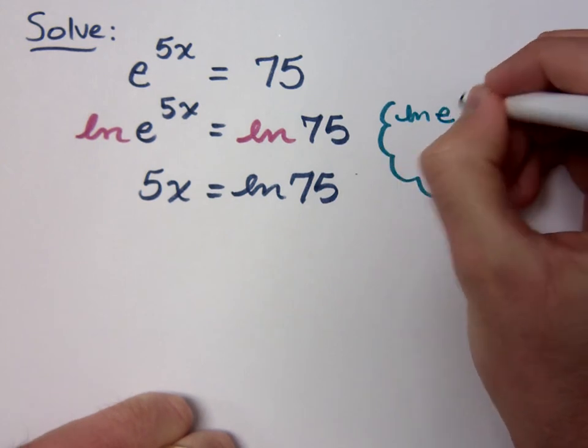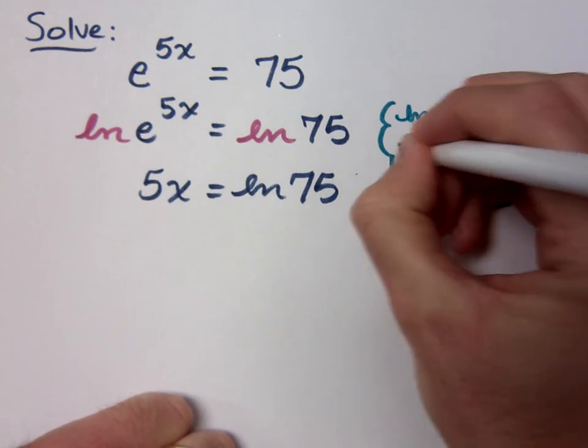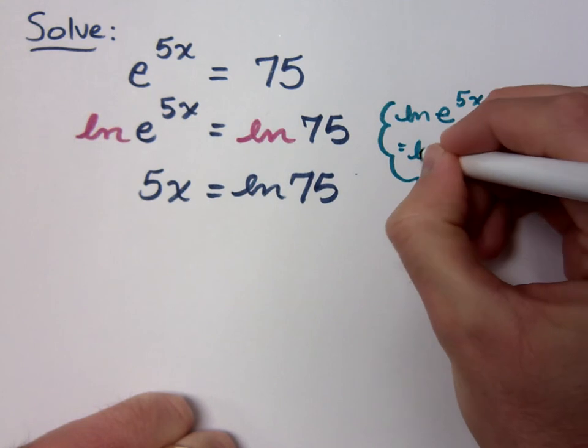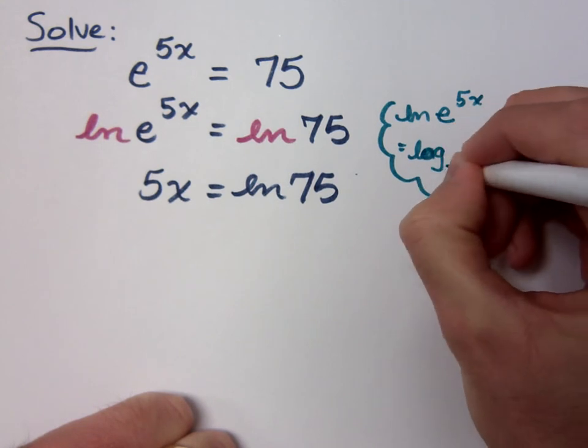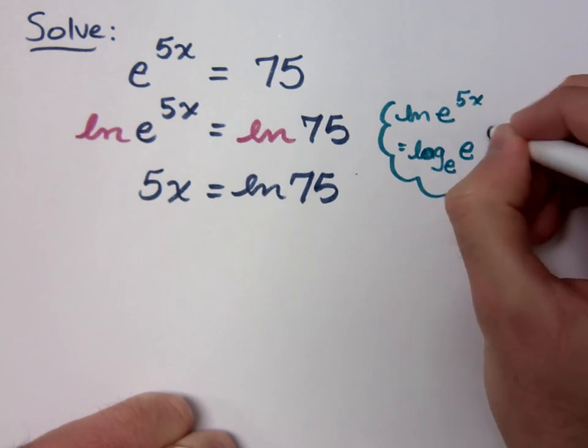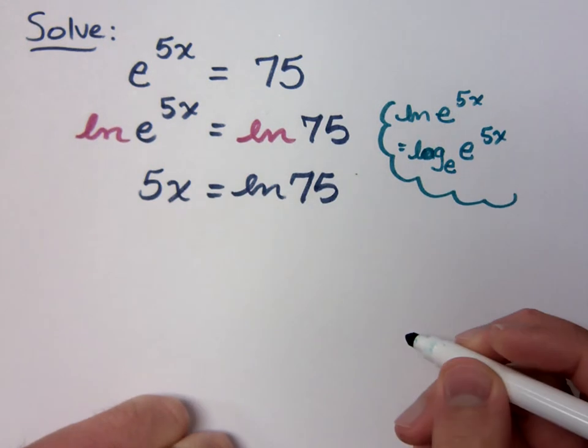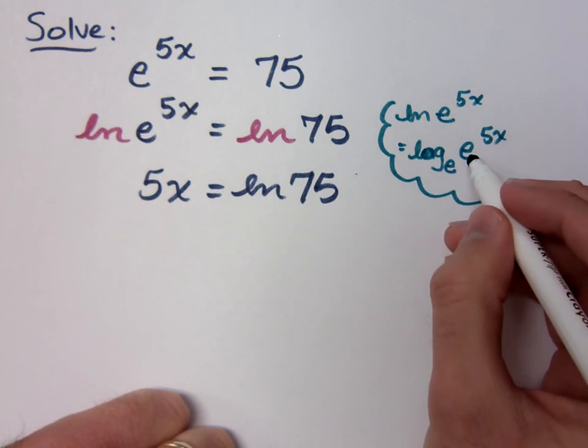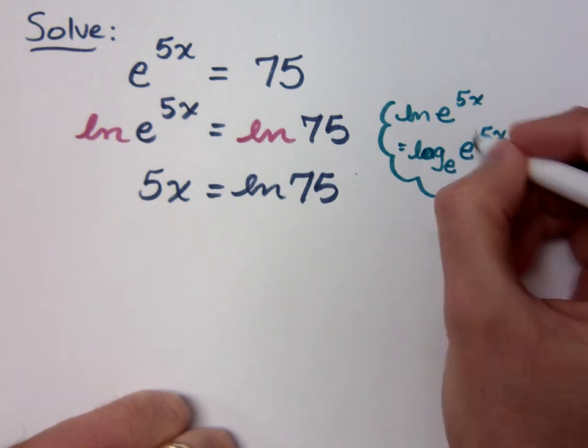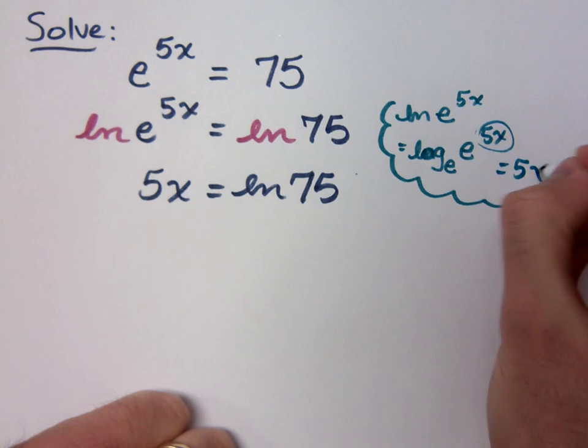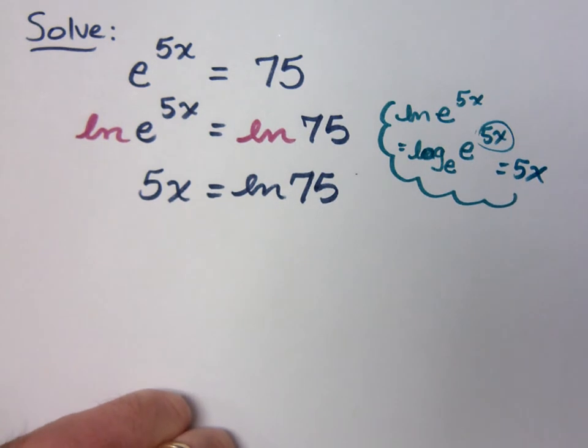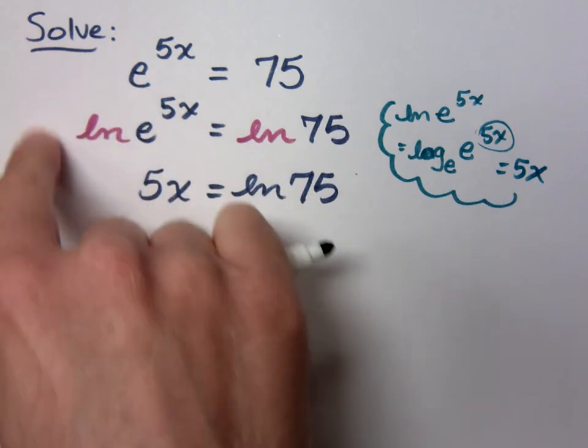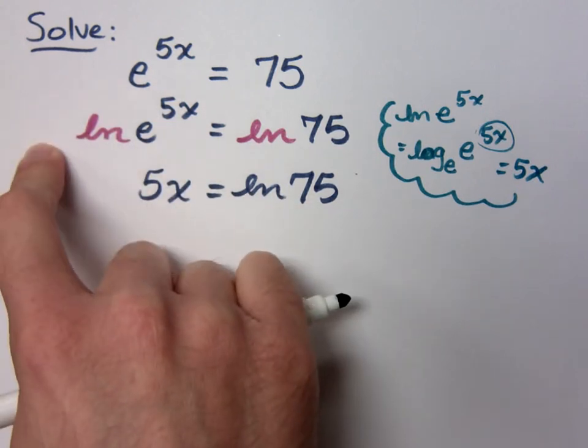Right, because the natural log of e to the 5x means the log with base e of e to the 5x. And just like we saw in your test, when the base of the log is the same as the base inside the log, then the answer is just the exponent, 5x. Now, it also would have worked out the same had you written the 5x out in front and said 5x natural log of e. But what is the natural log of e?